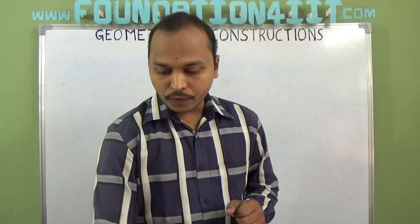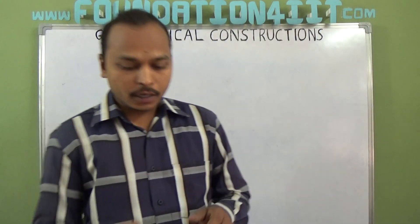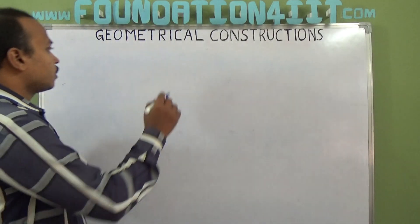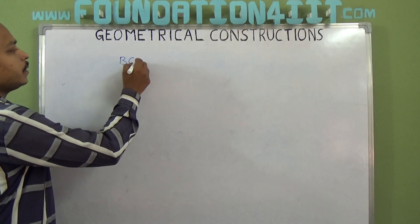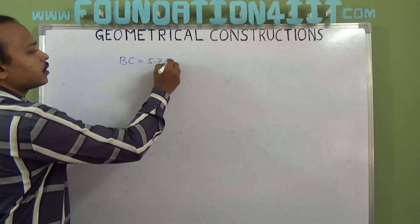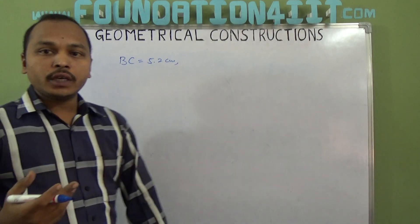Okay, one side and two angles are given. How we need to construct we will see. First let me write the question. One side, for example BC is 5.2 cm and two included angles.